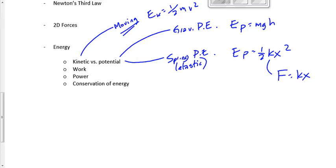We've got three equations for energy used in physics 20. The equation one-half kx squared will often require finding k using F equals kx. Sometimes you'll have to find k using the potential energy equation to put it into Hooke's Law, F equals kx — and it can go both ways.